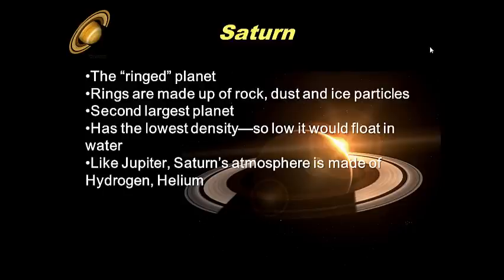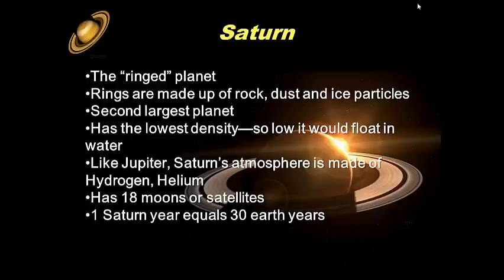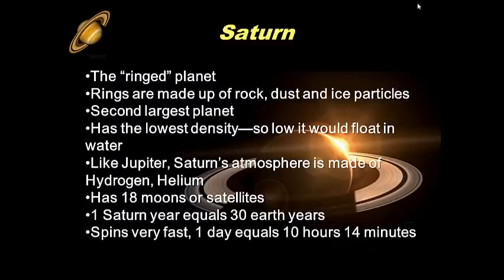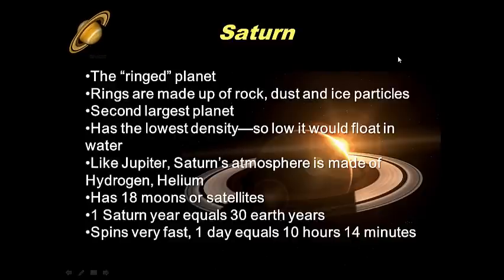Saturn's atmosphere is made mostly of hydrogen and helium. It has 18 moons or satellites. One Saturn year equals about 30 Earth years, so on your 30th birthday Saturn will have gone around the Sun once. Like Jupiter, it spins very fast — completing a full rotation on its axis in about 10 hours, compared to Earth's 24 hours.